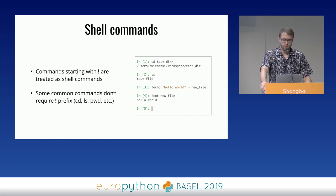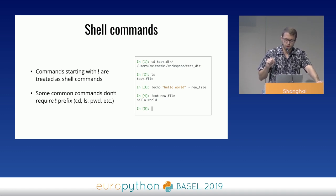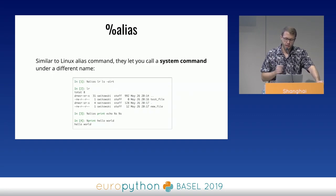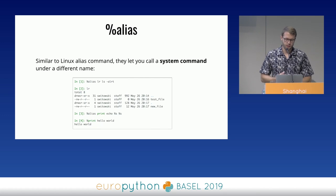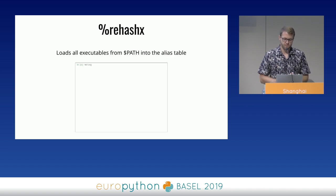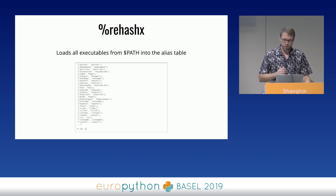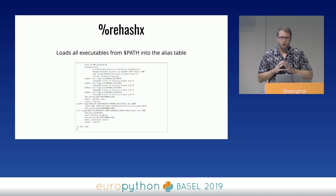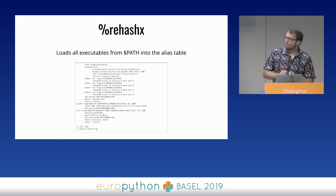In IPython you can run shell commands — any command starting with an exclamation mark is treated as a shell command. Common ones like cd or ls can work even without the exclamation mark. You can create aliases, which are basically the same as aliases in Linux, letting you call a system command under a different name, and in IPython they can also accept positional parameters. There's also a cool and probably not well-known magic function called rehashx — it loads all the executables from the PATH variable into the IPython session, which means you can call any shell command right from IPython.